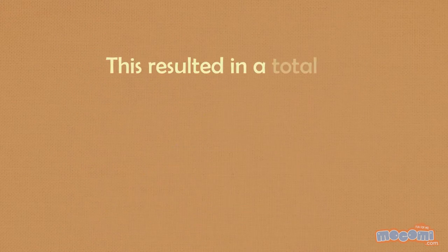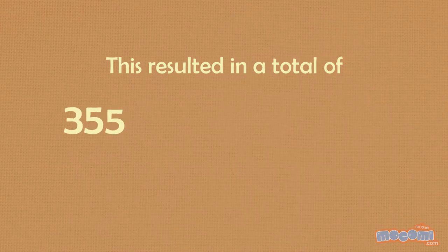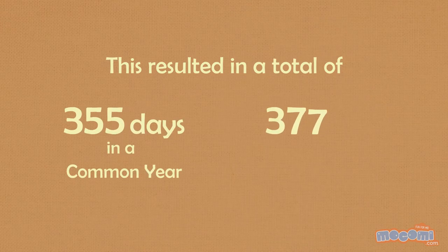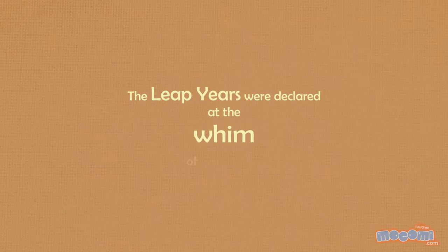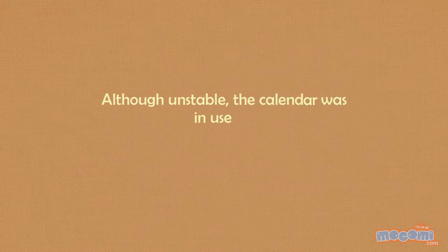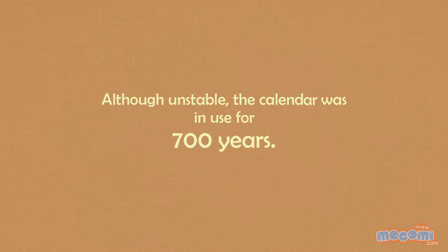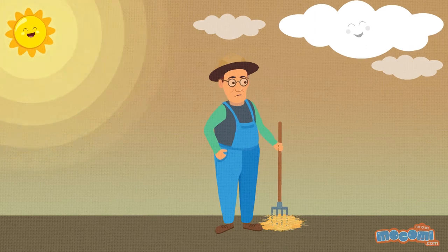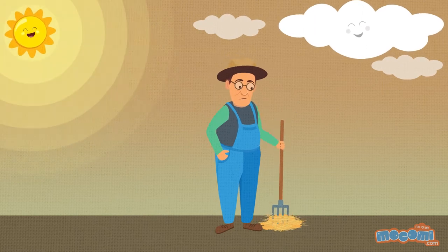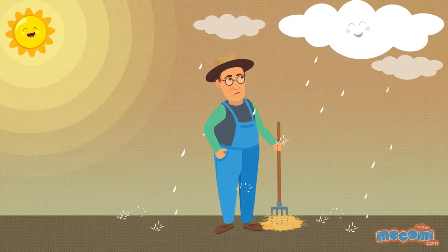This resulted in a total of 355 days in a common year and 377 days in a leap year. The leap years were declared at the whim of the king. Although unstable, the calendar was in use for 700 years. But it got very confusing because seasons and calendars did not match. It played havoc with the farmers.